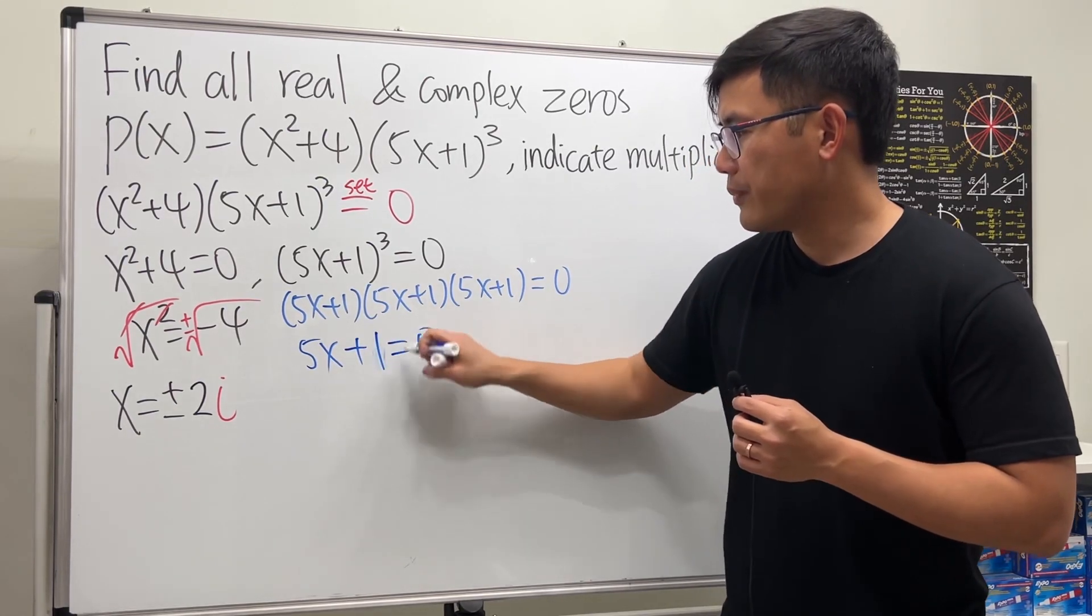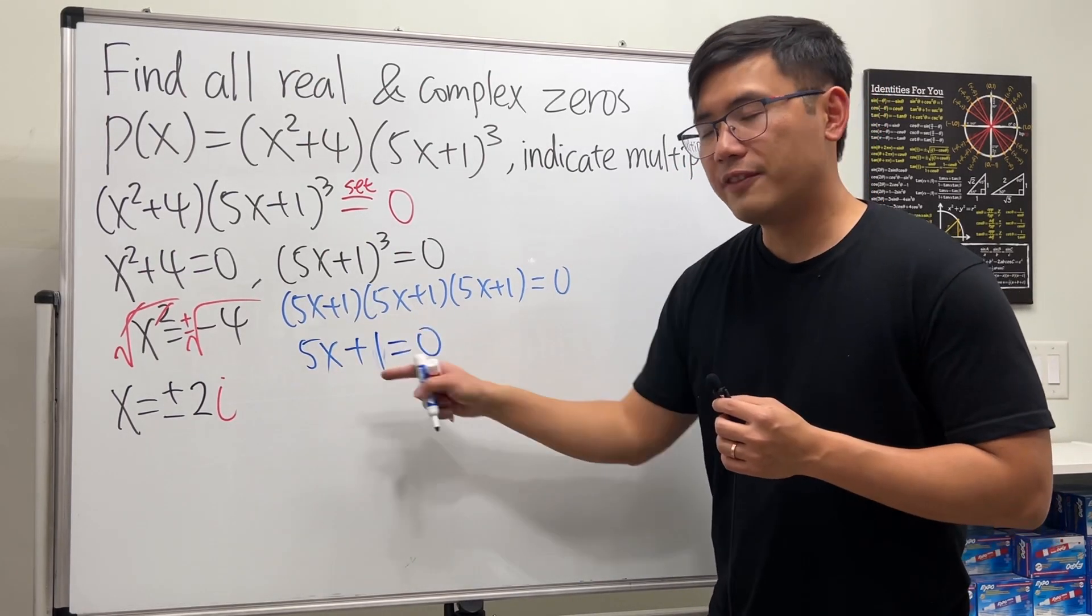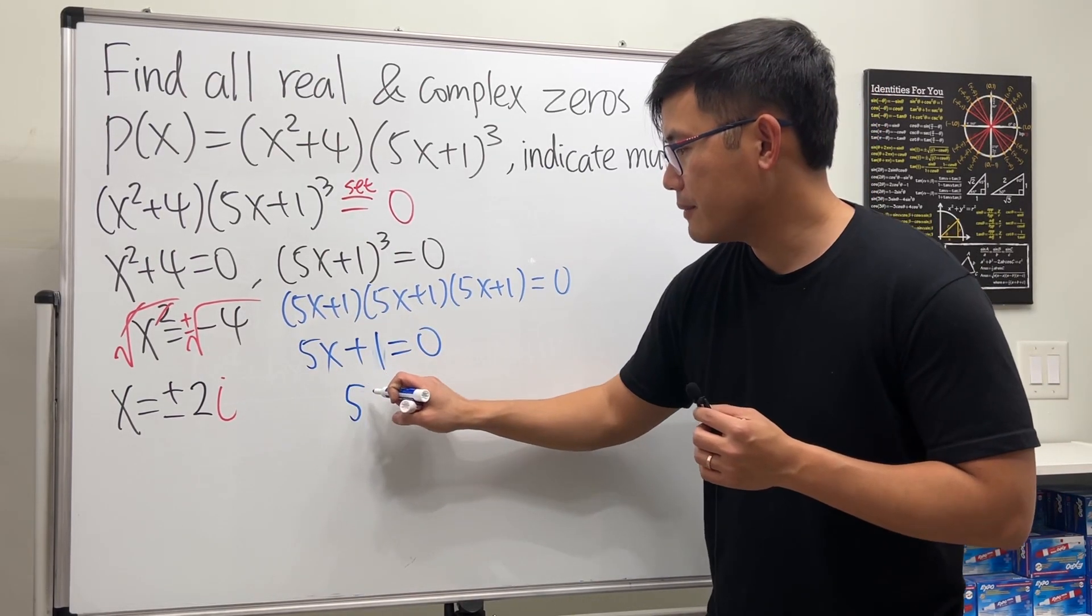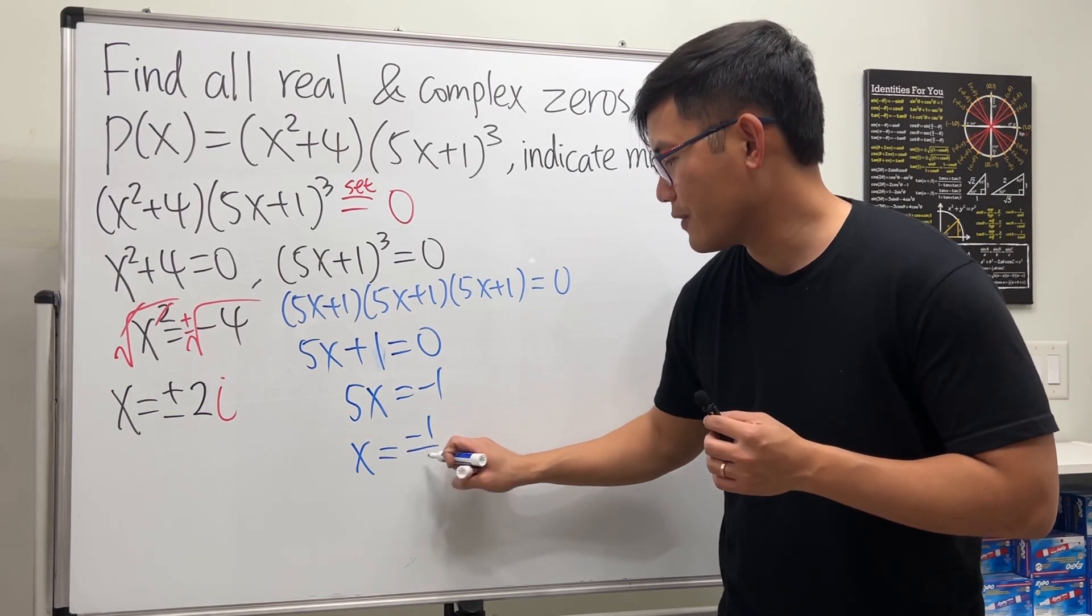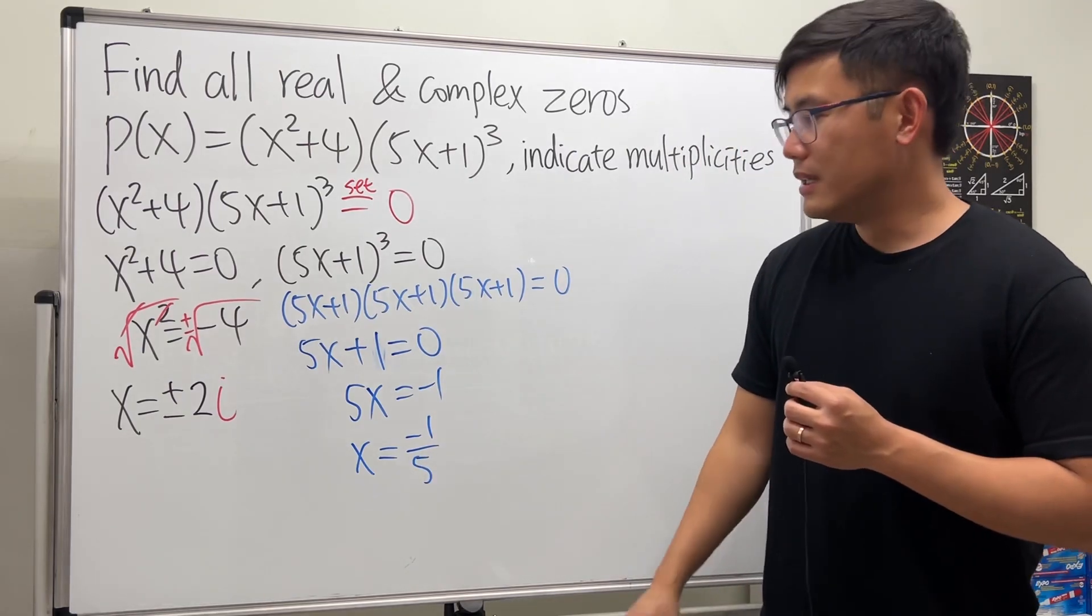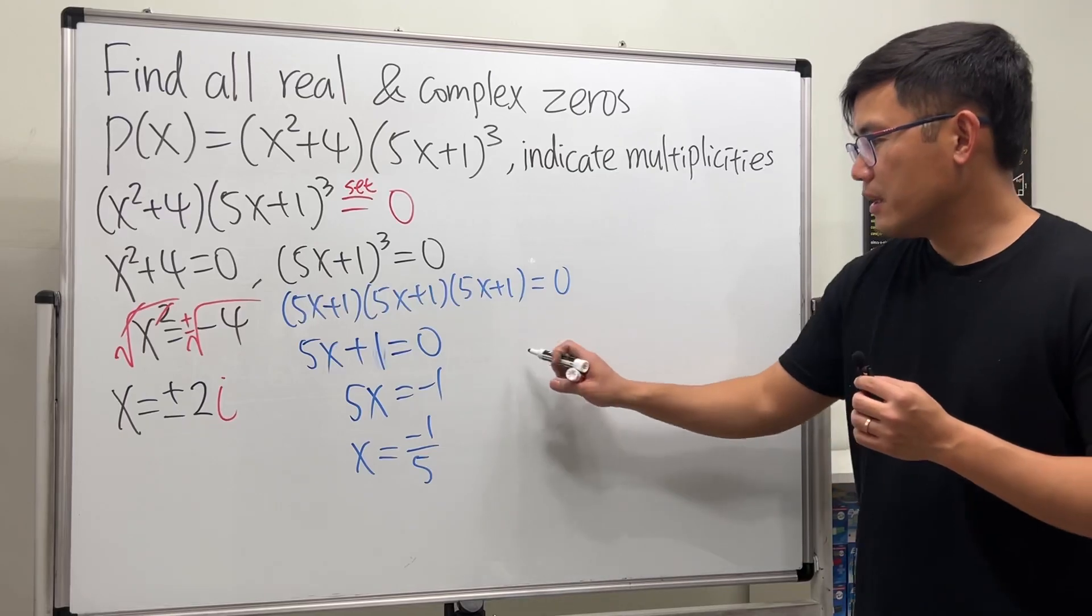Solve it: minus 1 on both sides, divide the 5 on both sides. So we get 5x is equal to negative 1, divide 5 on both sides, we have x equals negative 1 over 5.